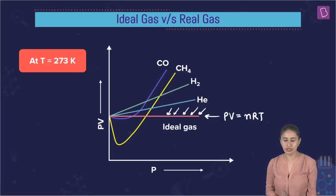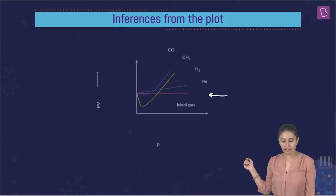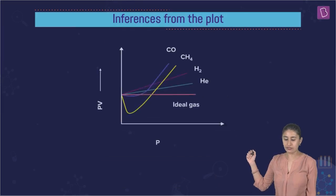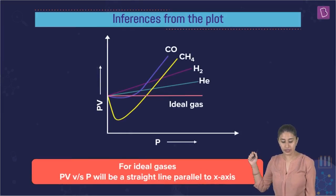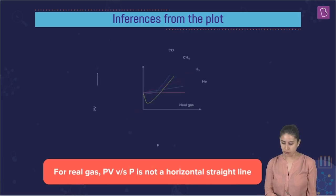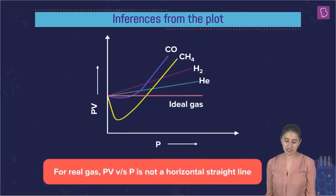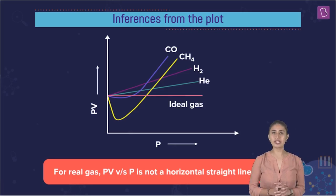Let's make the observations. I'm sure you have observed very well that at constant temperature, PV equals constant. Boyle's law is what we are applying. Also, you can obviously see that for an ideal gas, PV versus P will be a straight line parallel to the x-axis. But what do you observe? You observe that for real gases, PV versus P is not a horizontal straight line.